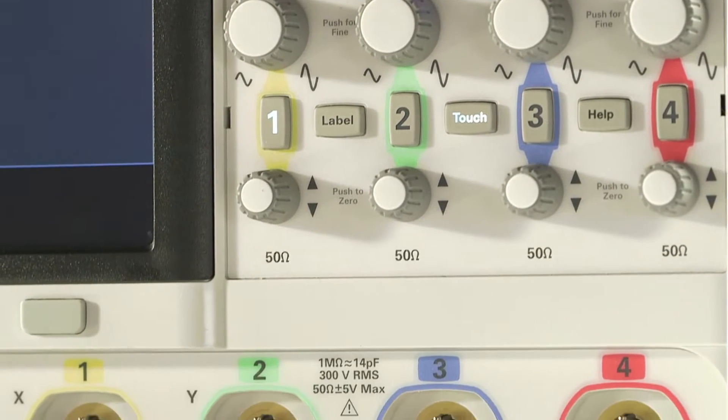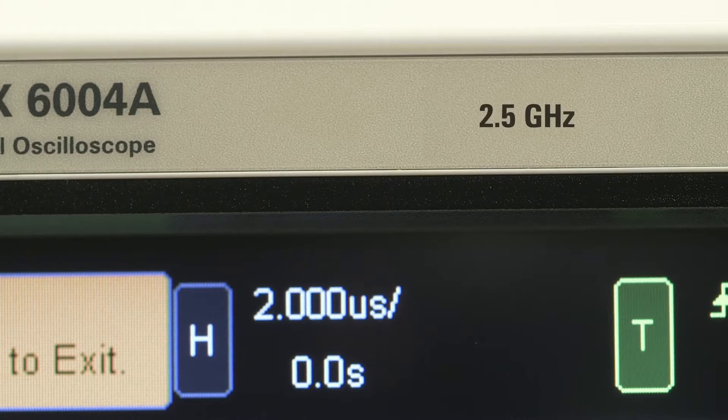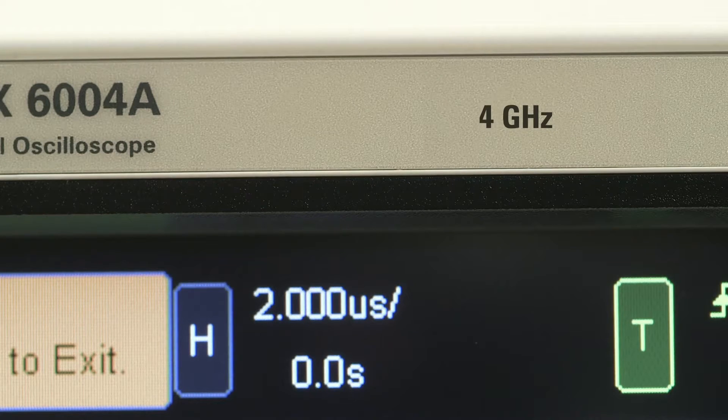You can choose either 2 or 4 channels, bandwidths start at 1 GHz, and you can instantly upgrade it anytime with bandwidths of 2.5, 4, and 6 GHz.